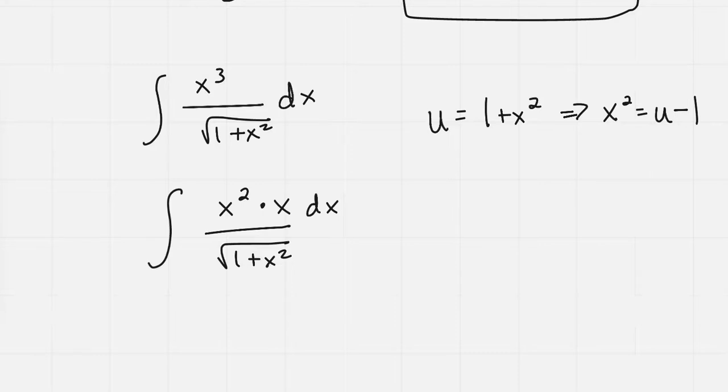So let's go ahead and work with that. I have du equals 2x dx. And so for me, the way I work, I need to see that as 1 over 2x times du equals dx, and I do that substitution.